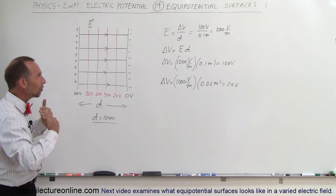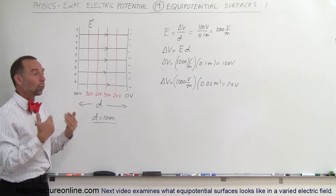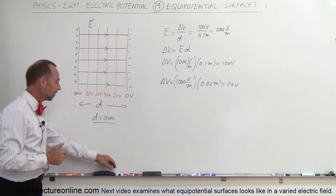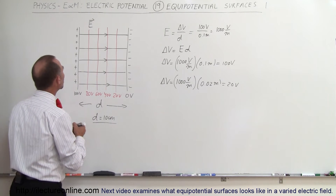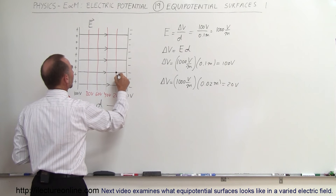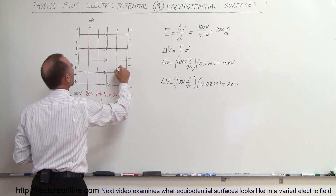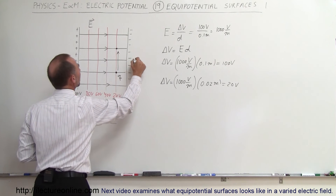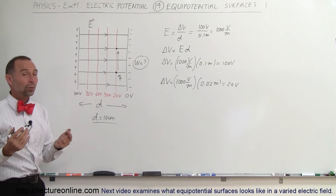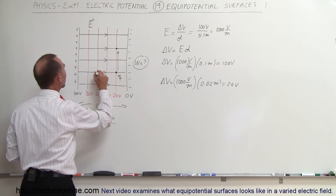Hopefully that gives you a feel for what equipotential surfaces are: the potential doesn't change, and work is not required to move from point A to point B. Let's do a quick example. Let's place a charge Q right there and move it to another location. What is the work required? The answer is zero work because the potential didn't change.